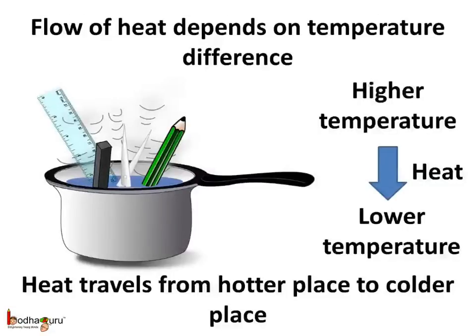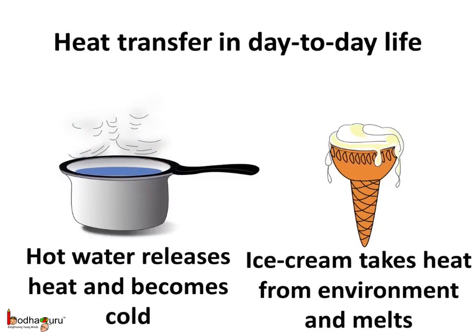When we put the pair of scissors in the hot water, it became warm — the heat travelled from the hot water to the pair of scissors. When we keep a hot thing in the open, heat gets transferred to the relatively cold environment, so the thing cools down. On the other hand, if we keep ice cream in open air, heat from the warmer environment transfers into the ice cream and it becomes warmer, so it melts. In all these cases, the heat flows from a hotter object to a colder object.